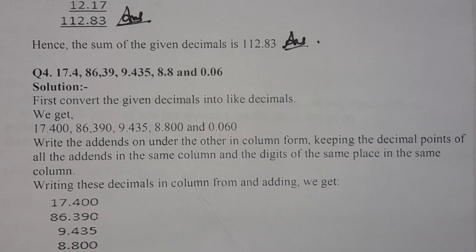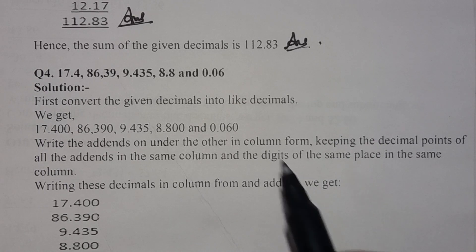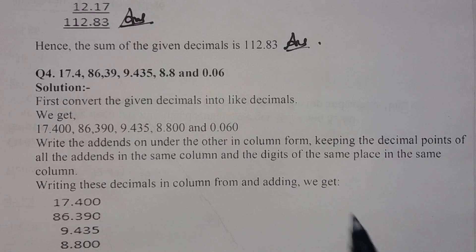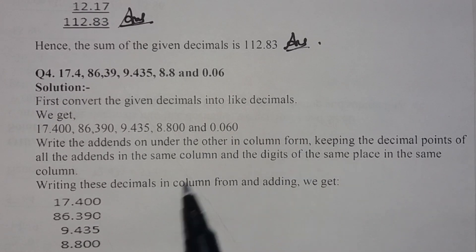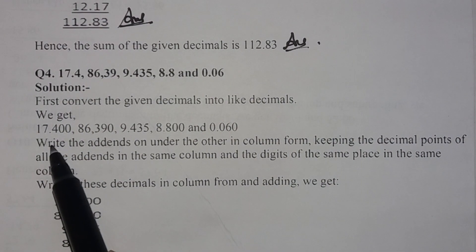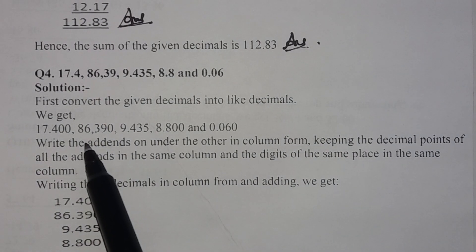In question number 4, we have 17.4, 86, 39, 9.435, 8.8, and 0.06. First of all, we will convert them into like decimals. So 17.4 will be 17.400, and 86 will be 86.000.